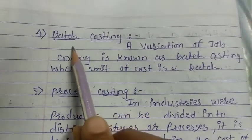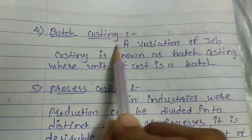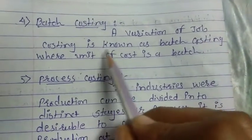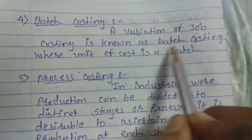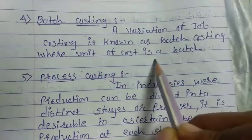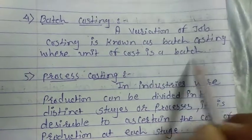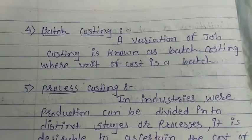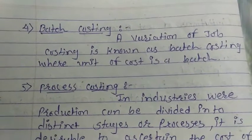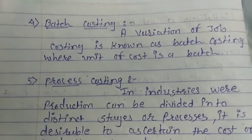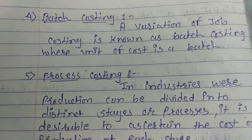Another variant of job costing is batch costing, where the unit of cost is a batch. It is employed where orders or jobs are arranged in batches.